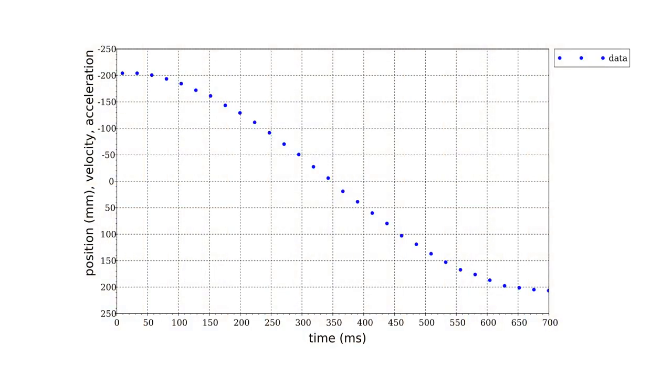Here are our observed x-coordinates versus time for roughly one-half an oscillation period. Note that the position coordinate increases as we go from top to bottom. X is the downward displacement of the mass.